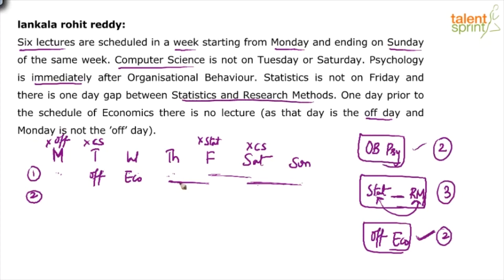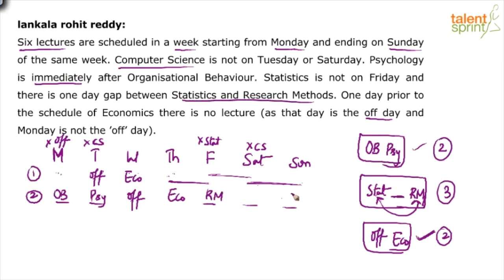Case 2: Off on Wednesday, Economics on Thursday. We have two consecutive positions on Monday–Tuesday and three consecutive positions on Friday–Saturday–Sunday. OB and Psychology fit Monday–Tuesday. For the three remaining positions Friday–Saturday–Sunday, Stats cannot be on Friday, so it must be RM–gap–Stat. But then Computer Science fills Saturday, which is not allowed — CS cannot come on Saturday. Case 2 also fails.